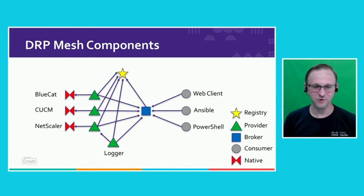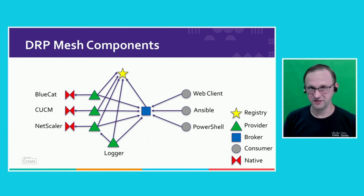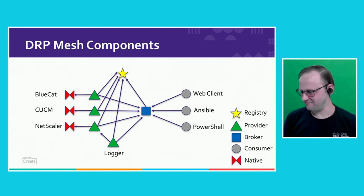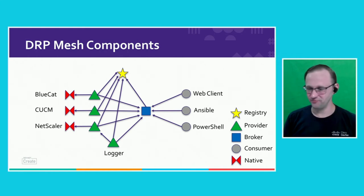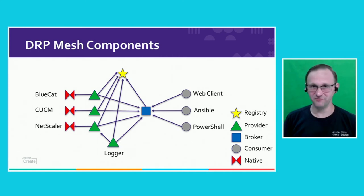A DRP mesh is made up of three basic types of nodes: registry nodes, provider nodes, and broker nodes. On the left-hand side we see the native services — in the instance where we want to talk to BlueCat, Call Manager, and NetScalers. We would have providers that interact with those native services. The providers take the capabilities of those services and advertise them to the registry, which in turn relays those to the broker. When consumers need to access the information from the backend services, they make calls to the broker, which reaches out to the providers and in turn to the backend native services.